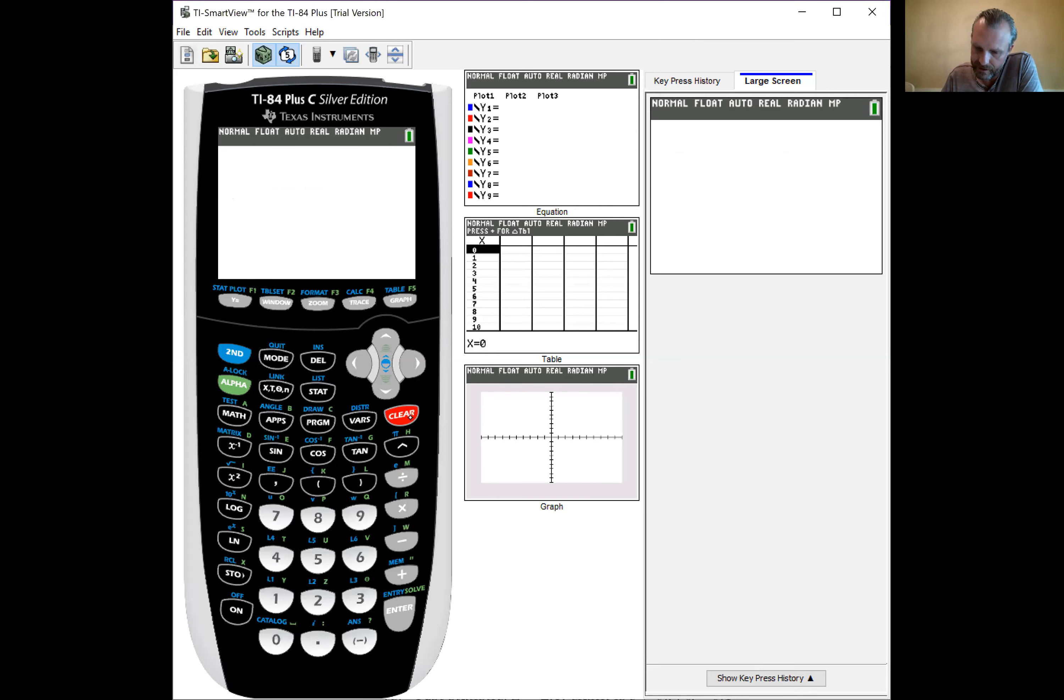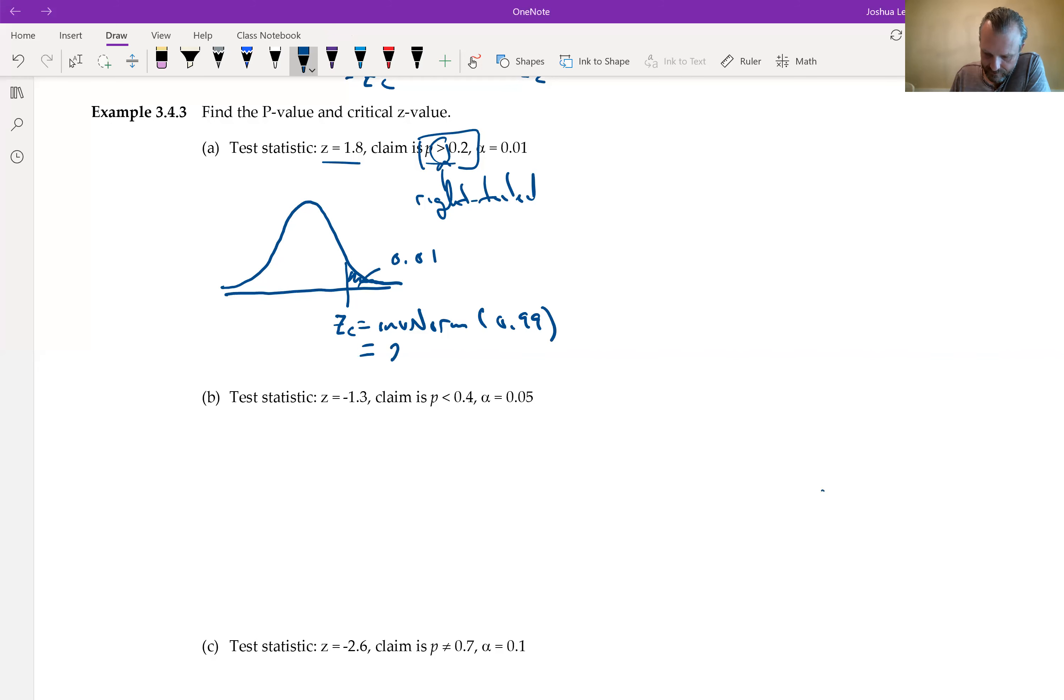And then here you get really a plus or minus; you get a negative Z_c, you get positive Z_c. And so here that area of 1 minus alpha is centered about zero. So let's take a look here. We're going to find the P value and the critical Z value. The test statistic is 1.8. The test statistic came from our sample. Whatever that was, there's a sample. And when we did some computation, the Z score from that sample was 1.8.